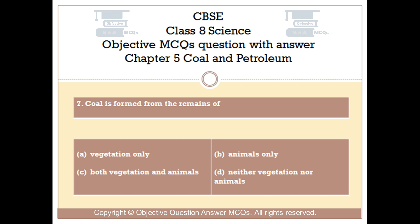Question number 7. Coal is formed from the remains of — Option A: Vegetation only. Option B: Animals only. Option C: Both vegetation and animals. Option D: Neither vegetation nor animals.